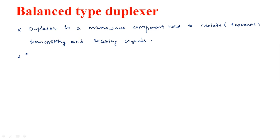During transmission, the transmitter generates a high amount of signal. During reception, the received signal is a very weak echo signal. In order to receive such weak echo signals, the receiver must be designed in a highly sensitive way. A high-sensitive receiver should not have high power signals as input, because such high power signals would damage the receiver.